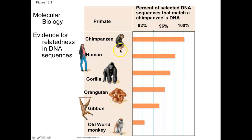Looking at the relatedness chart, who is most related to the chimp? It's the human. The gorilla, orangutan, gibbon, and old world monkey are not as closely related to chimps as we are. In fact, there is a scientist at UCLA who calls humans the 'third chimpanzee' — there are a couple of different chimp species on the planet, and then we're the third.